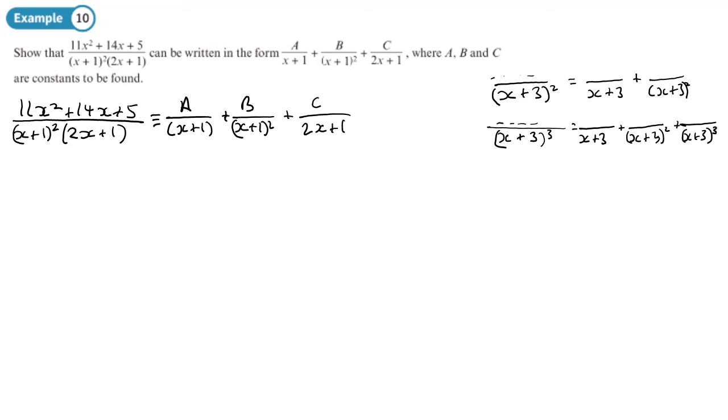So step number 1, multiply out the right-hand side so we get the same denominator. The first fraction doesn't need to be multiplied by x plus 1 squared, just x plus 1. That will then give you x plus 1 squared and then 2x plus 1. The b doesn't need to be multiplied by x plus 1 because it's already a factor, just need to be multiplied by 2x plus 1. And the c term needs to just be multiplied by x plus 1 squared because that contains the factor of x plus 1. And that is equal to the numerator of the other side.